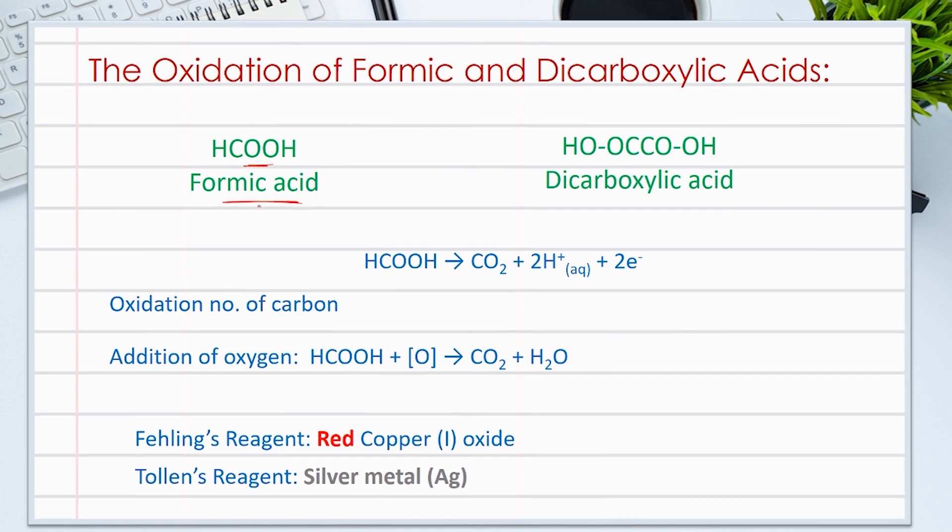Further oxidation may not work with many carboxylic acids, but methanoic acid, also called formic acid, and dicarboxylic acids are strong reducing reagents, thus they can be further oxidized and break into carbon dioxide.